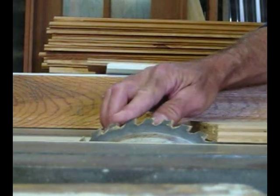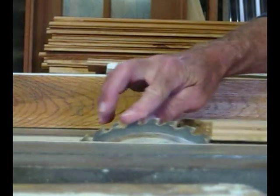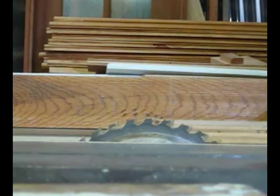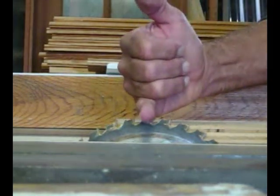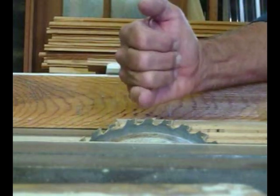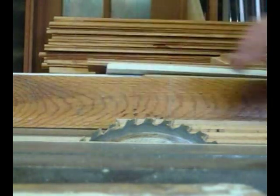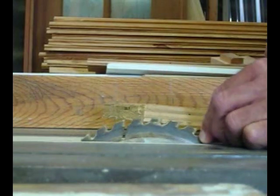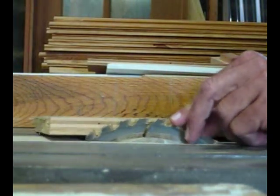As you begin your cut, the teeth actually hold the board down against the table and there's no problem. But as you continue your cut and you get past the halfway point of the blade, the teeth on the backside of the blade actually lift the board off the table.